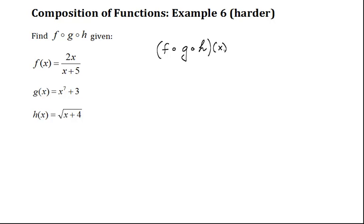f compose g compose h is just equal to f of g of h of x. So, we're going to start by replacing h of x with square root of x plus 4, which is what it's defined as. So, we get f of g of root x plus 4.